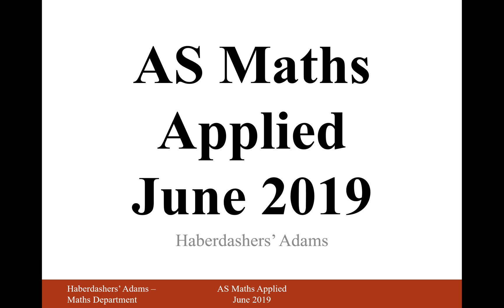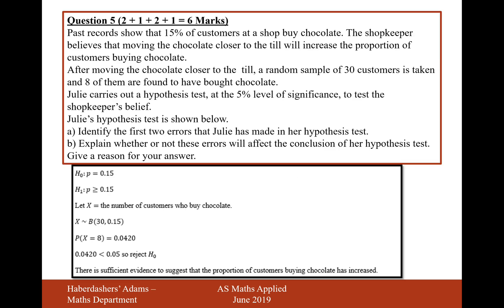Hello there, welcome to the June 2019 Applied Paper. Here we're looking at question 5. Past records show that 15% of customers at a shop buy chocolate. The shopkeeper believes that moving the chocolate closer to the till will increase the proportion of customers buying chocolate. After moving the chocolate closer to the till, a random sample of 30 customers is taken and 8 of them are found to have bought chocolate. Julie carries out a hypothesis test at the 5% significance level to test the shopkeeper's belief. Julie's hypothesis test is below.